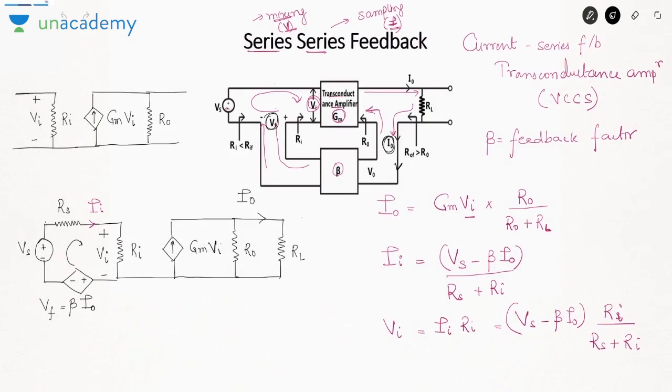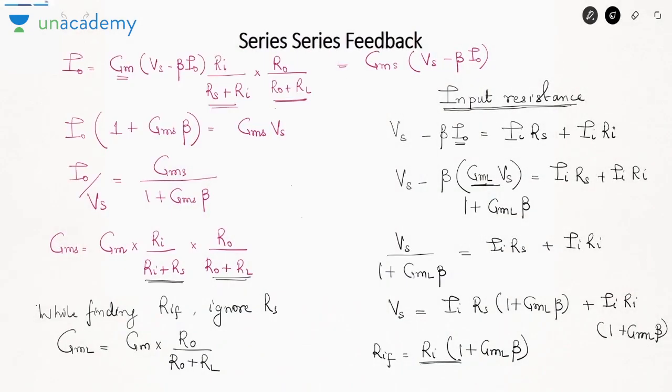Now let us talk about the output resistance. While writing the equation for output resistance, the voltage across the output node is V0. Applying KCL at this node: there is one incoming current Gm·Vi and two outgoing currents.